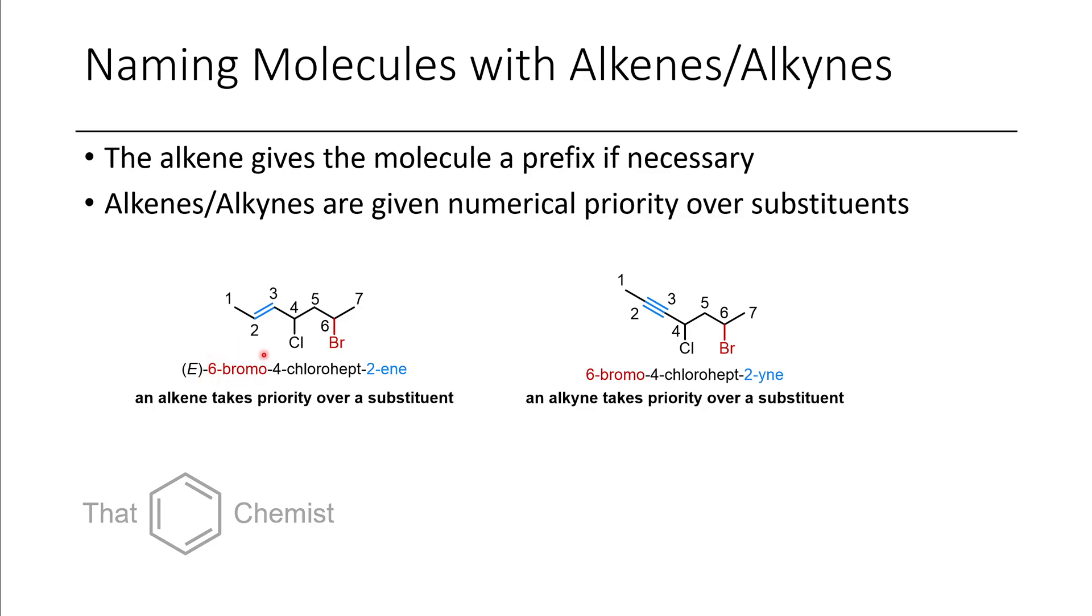Here you can see we number from the left to right. Even though we have a bromine in one carbon over from the right side, because the alkene takes priority, we number from left to right so that the alkene gets the smaller number.